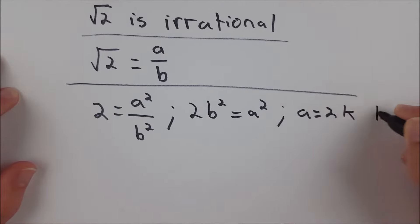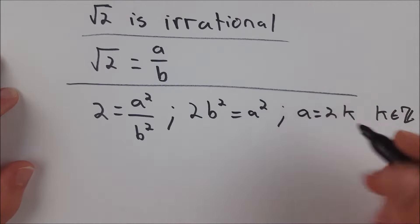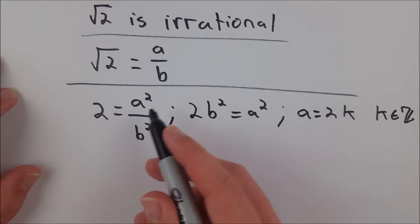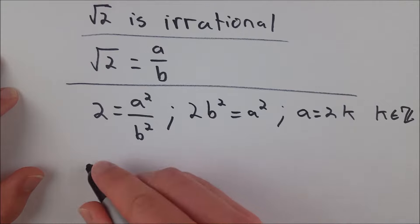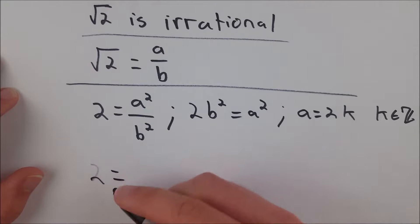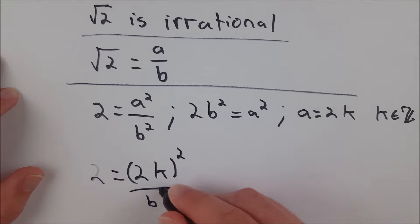So a equals 2k for some k that is an integer. So it's an element of the integers. a is an even number. Now we can go back to our equation over here and substitute 2k into a squared. So 2 is equal to 2k squared divided by b squared.